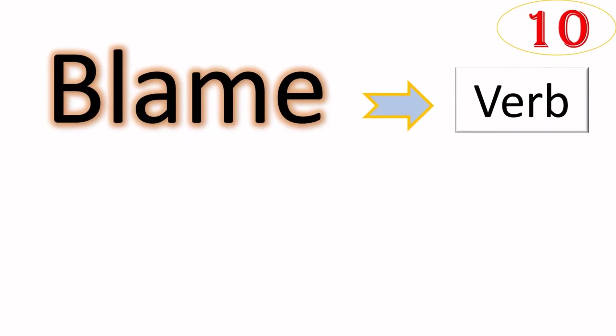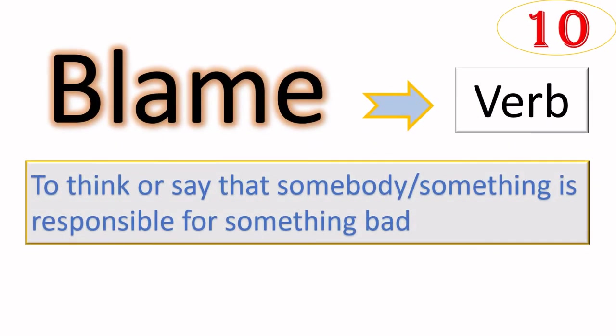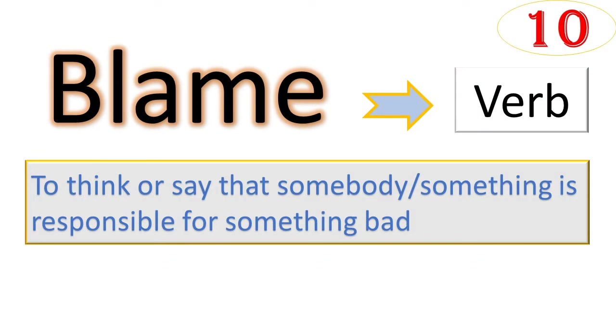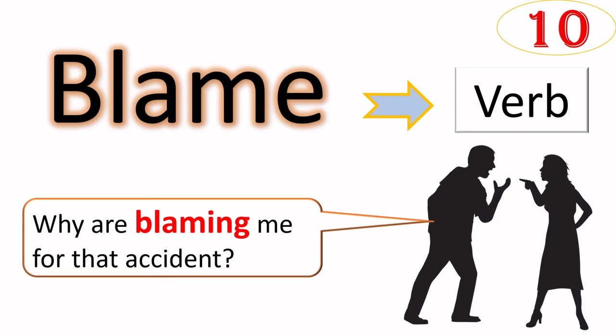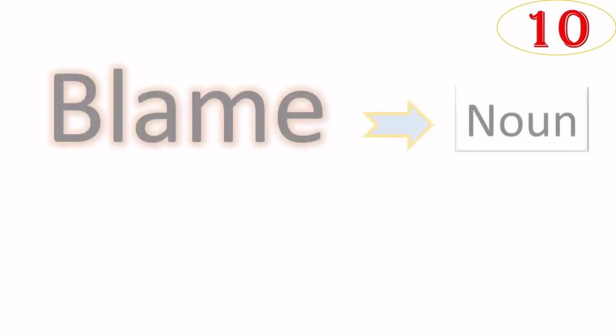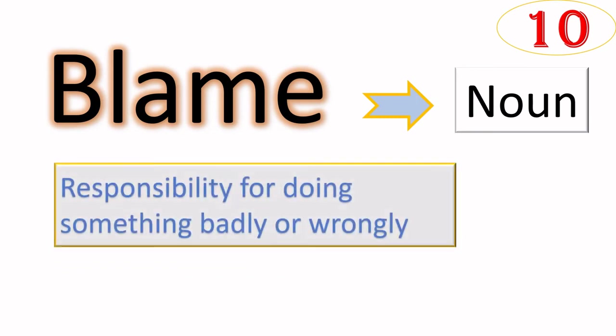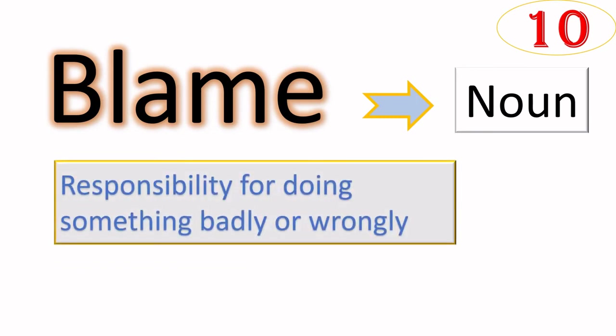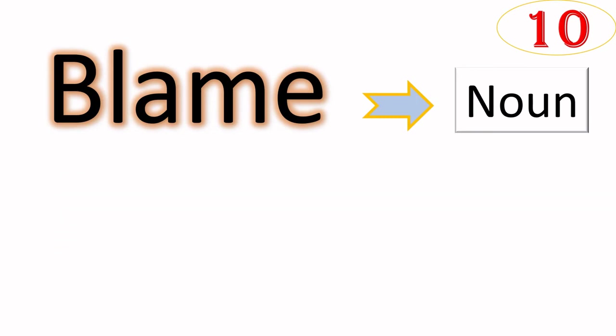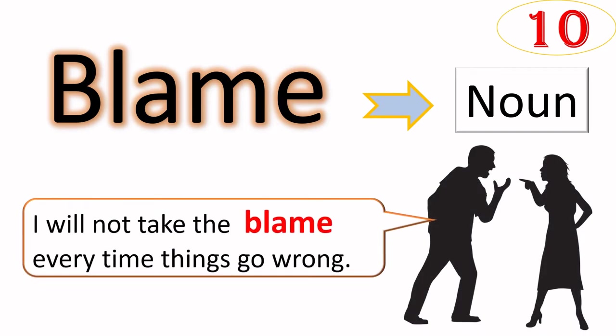Blame. We mostly use this word as verb and it means to think or say that somebody or something is responsible for something bad. For example, why are you blaming me for that accident? When we use the same word as noun, it means responsibility of doing something badly or wrongly. For example, I will not take the blame every time things go wrong.